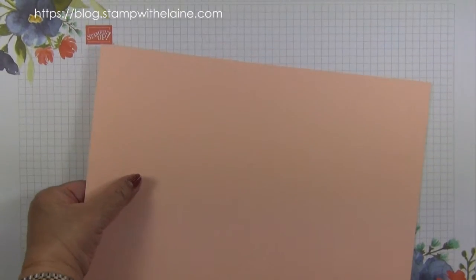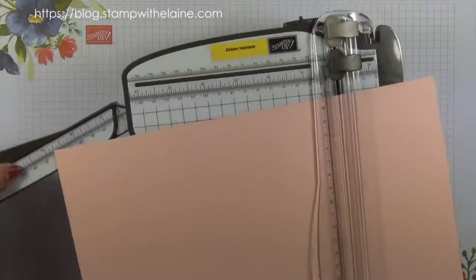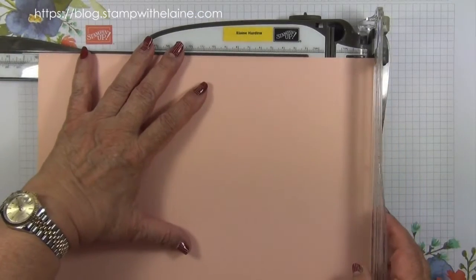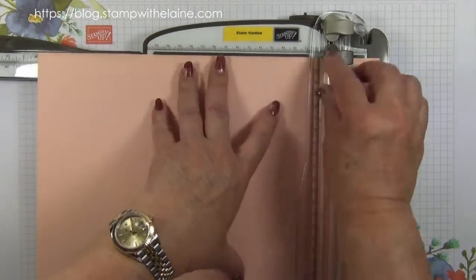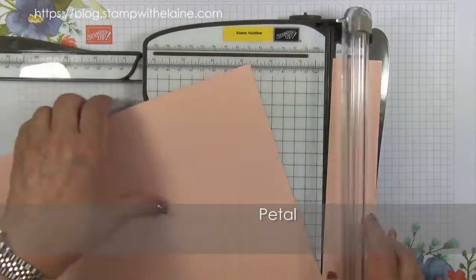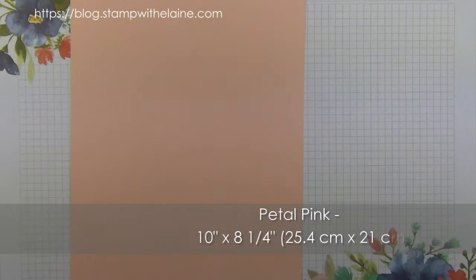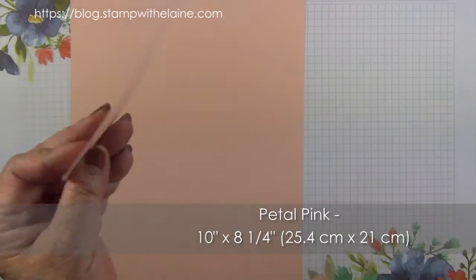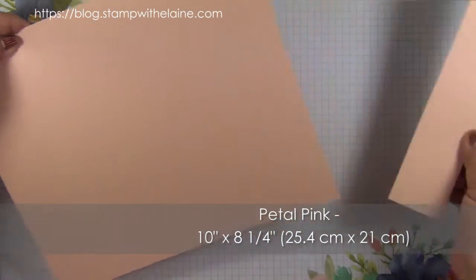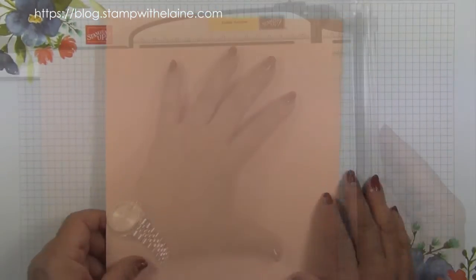I'm updating it with the Magnolia Lane designer series paper. You start off with a piece of cardstock that is 10 inches by 8 and a quarter inches. In Europe, you just cut off the end at 10 inches and you're left with that piece.